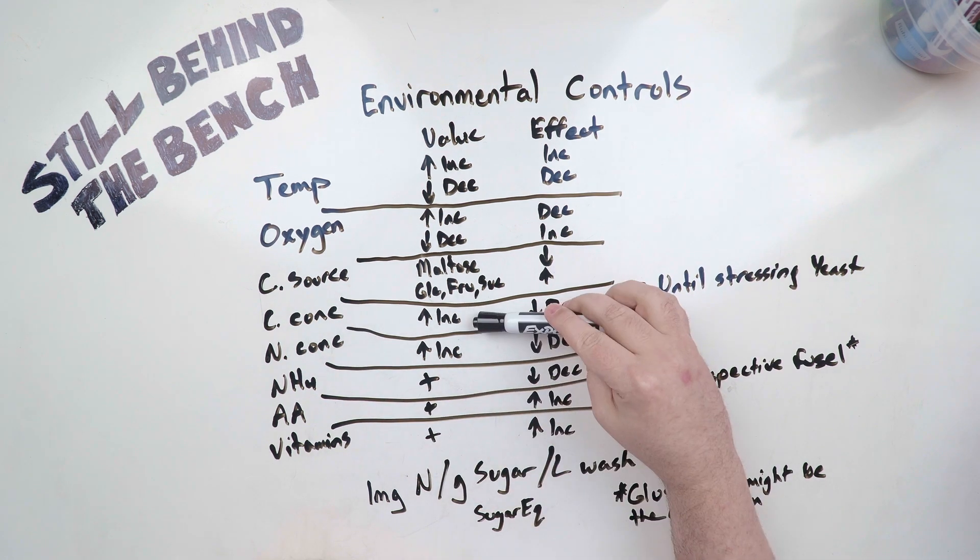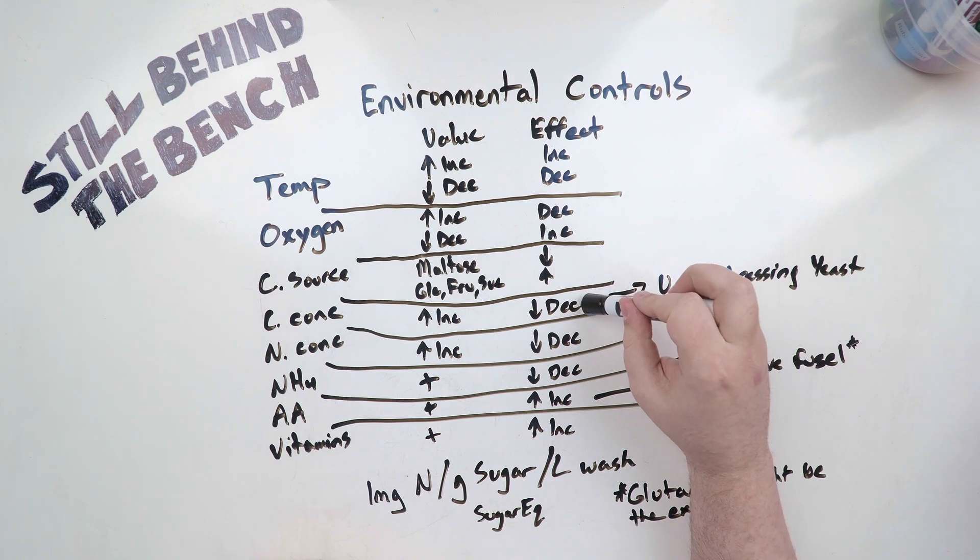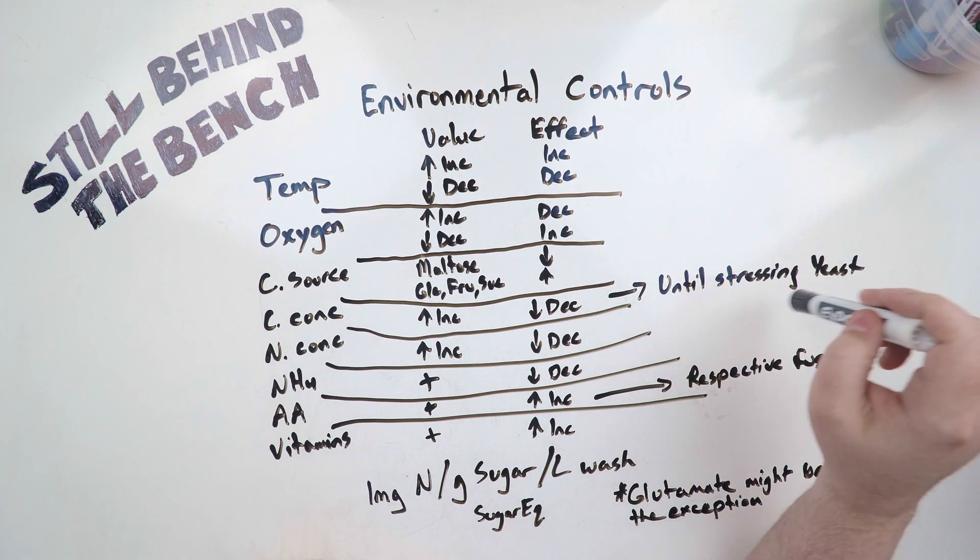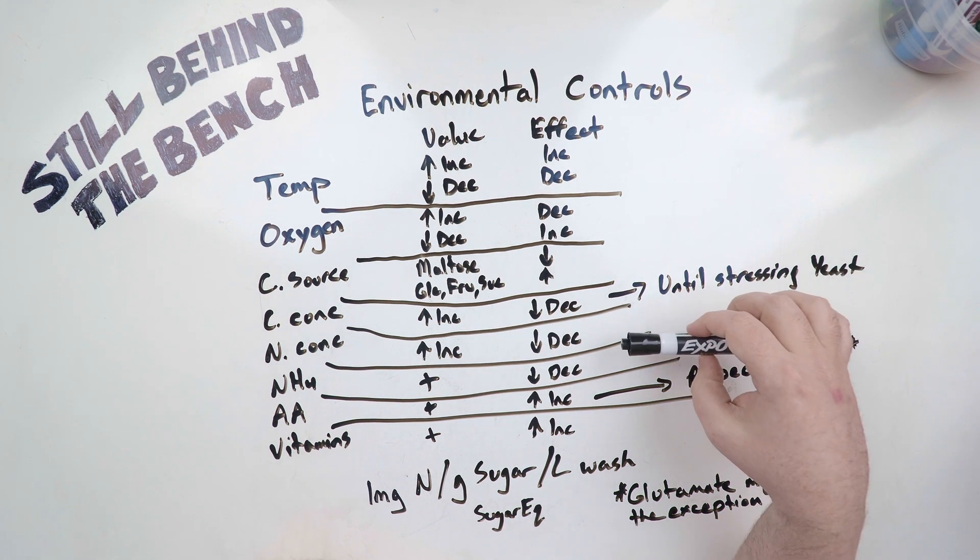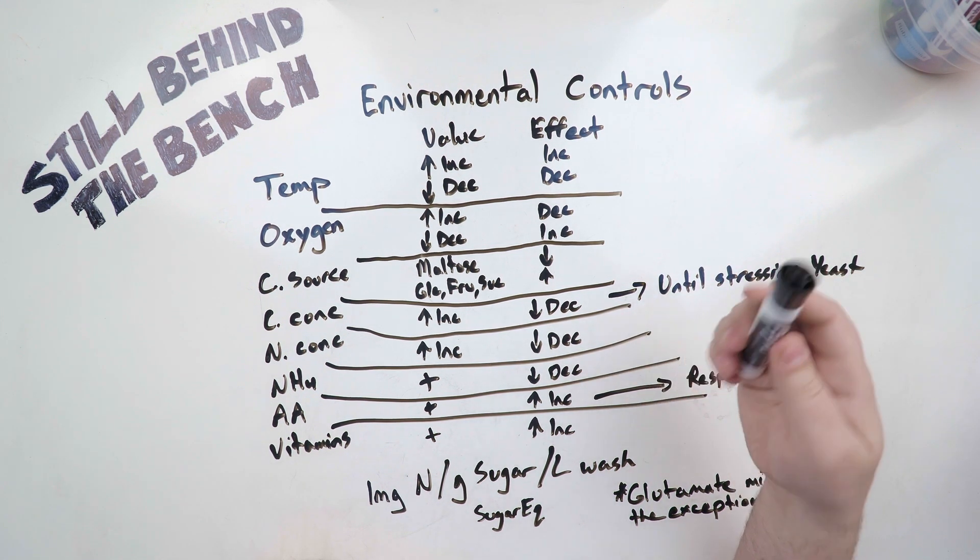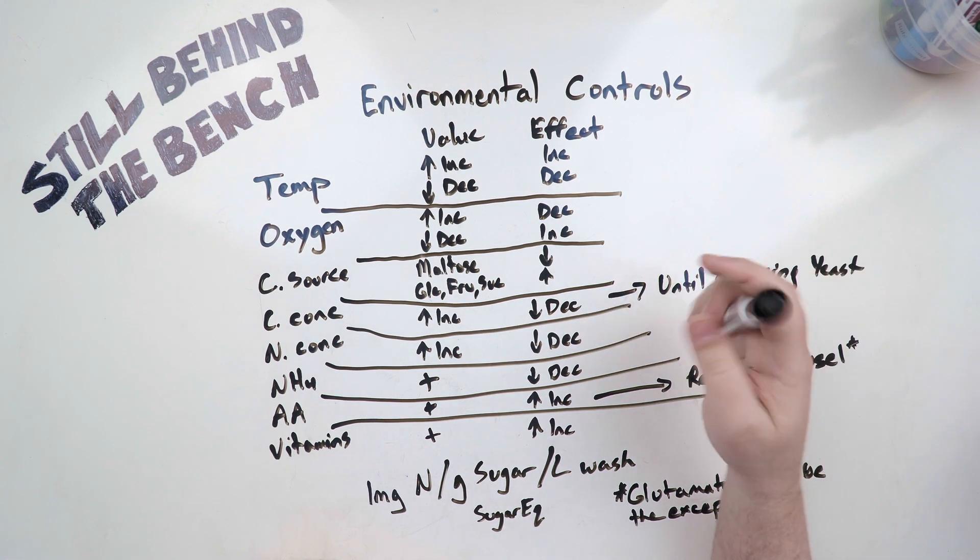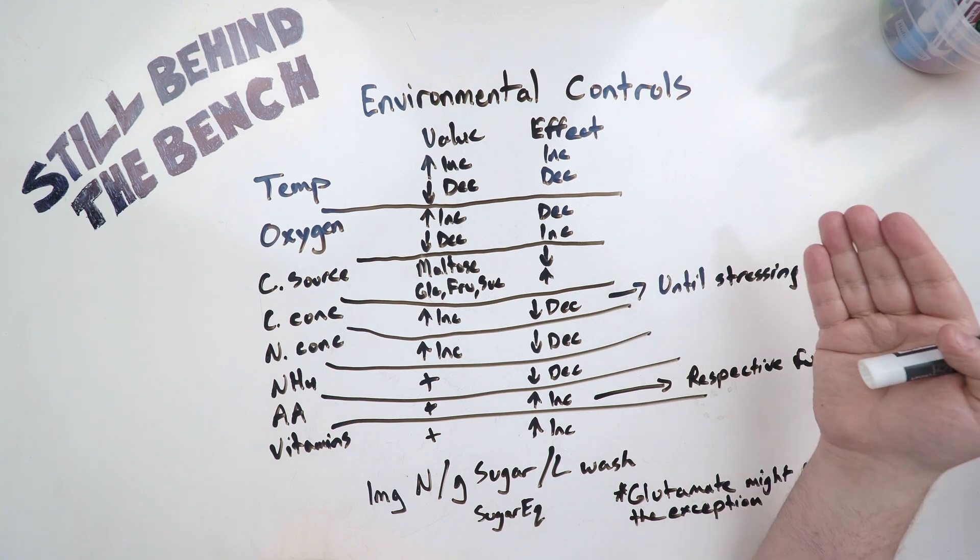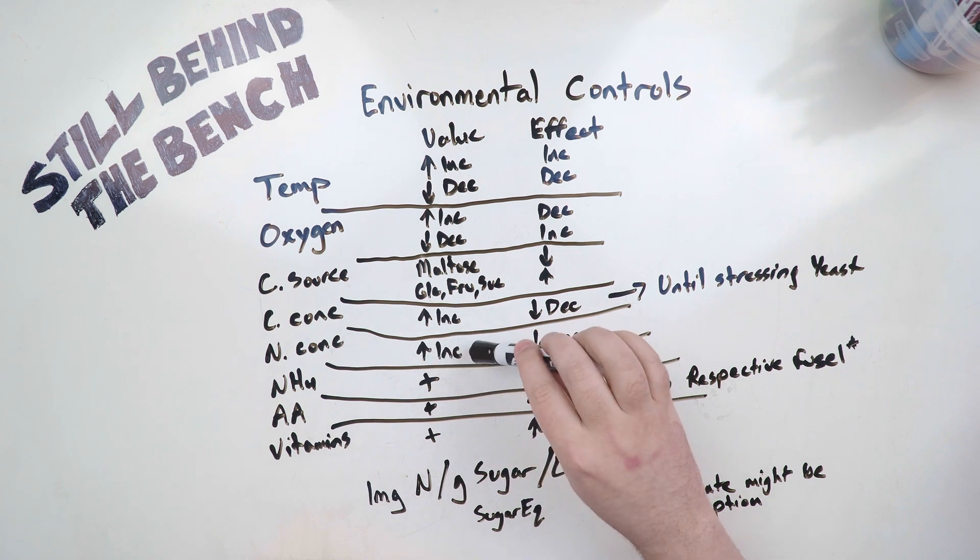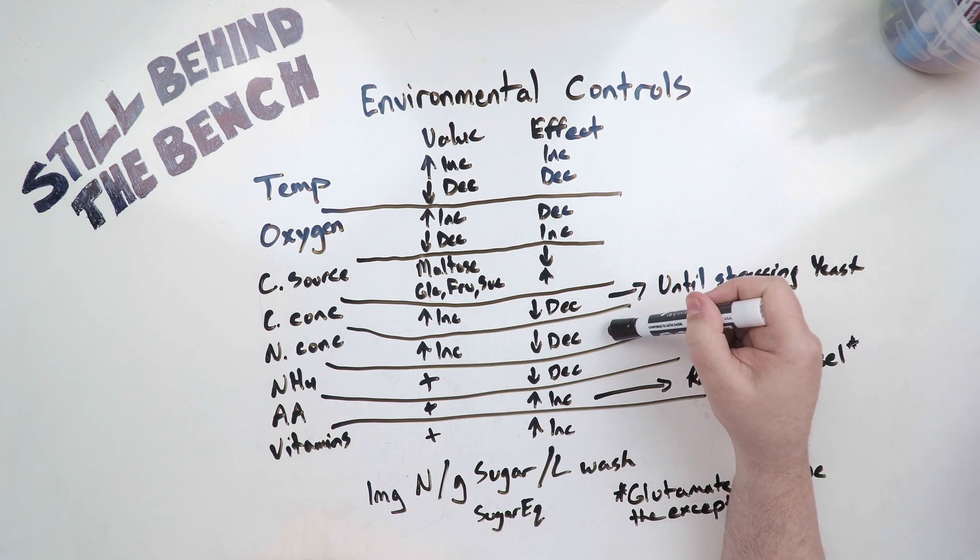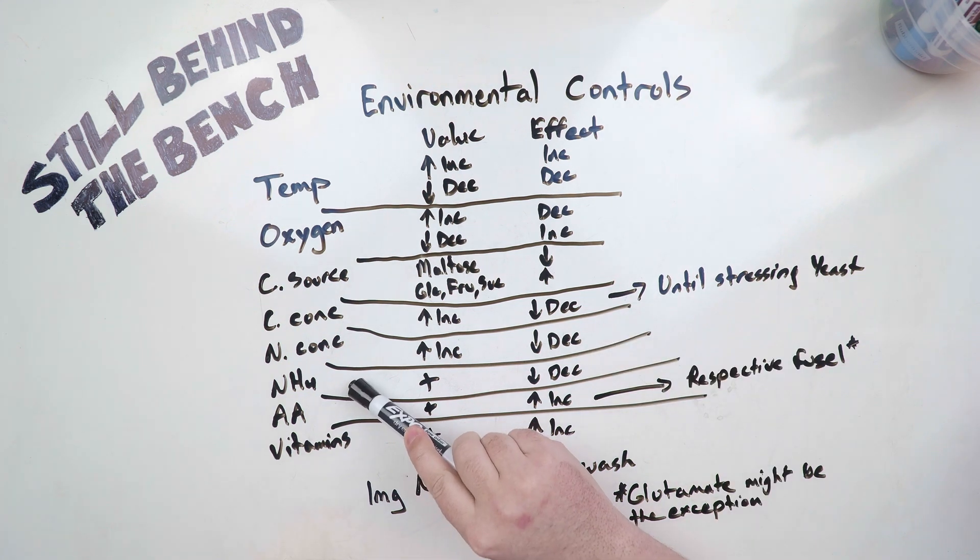Concentration - if you increase the concentration of carbon or sugars then you decrease the amount of fusel alcohols being produced, but there's a caveat: that's only until you start stressing out the yeast, and that goes both ways up and down. If you don't have enough sugar then the yeast are going to be stressed and they're going to produce more fusel alcohols. If you have too much sugar they're going to be stressed for osmotic reasons and again they're going to start producing more fusel alcohols. Total nitrogen concentration - as you increase it you're going to have less fusel alcohols. Again, this sort of has a caveat.